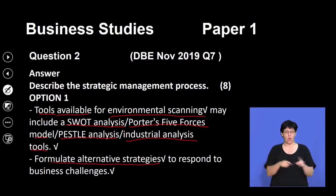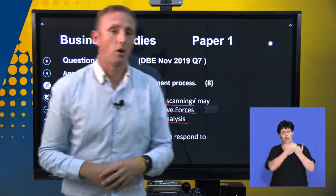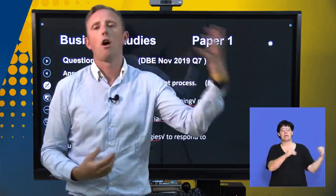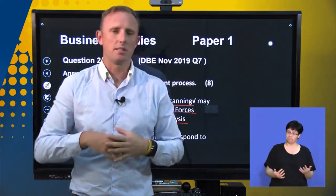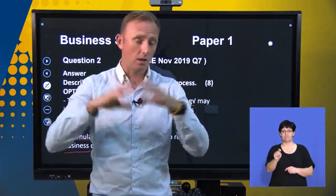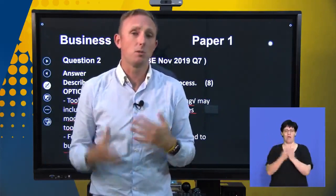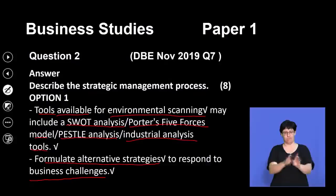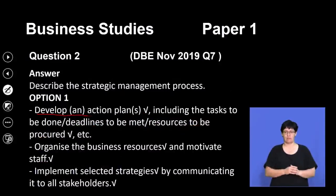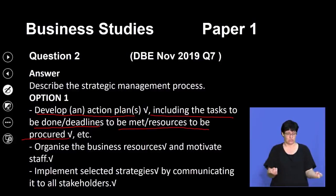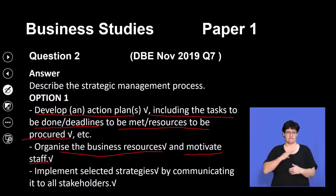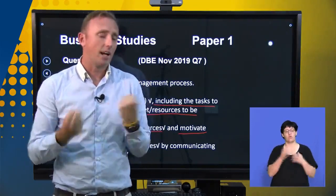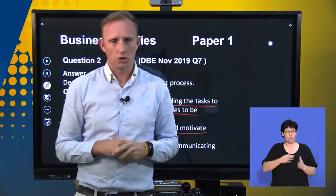We must formulate alternative strategies to respond to business challenges. A great example would be how businesses responded to the COVID pandemic — a lot of businesses started letting their employees work off-site, with Zoom meetings rather than face-to-face, because the government had implemented a lockdown. In option one, we can develop action plans including tasks to be done, deadlines to be met, and what resources need to be procured. We need to organise business resources and motivate our staff — if they don't buy into the strategy, unfortunately the strategy is going to fail.